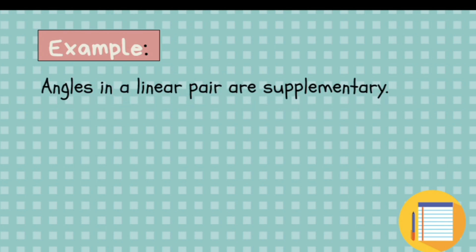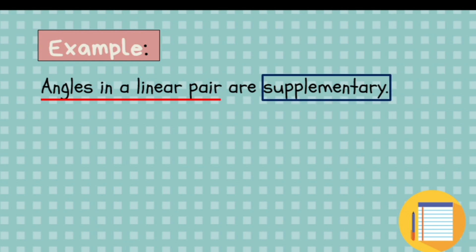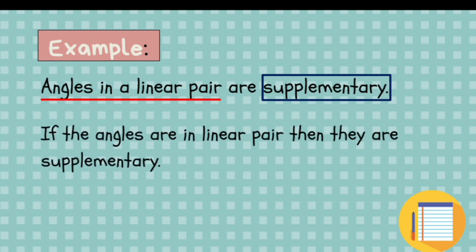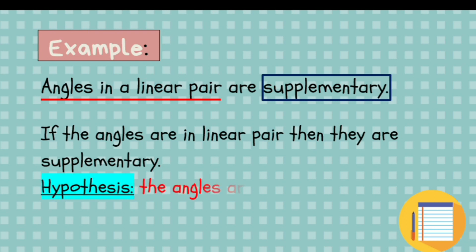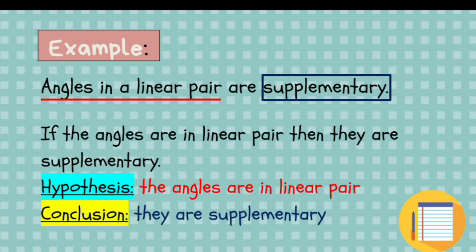Let's have another example. The statement given is: angles in a linear pair are supplementary. We are talking about angles in a linear pair which are supplementary. If we rewrite that as an if-then statement, that would be: if the angles are in a linear pair, then they are supplementary. The hypothesis is 'the angles are in a linear pair,' and the conclusion is 'they are supplementary.' That's easy.